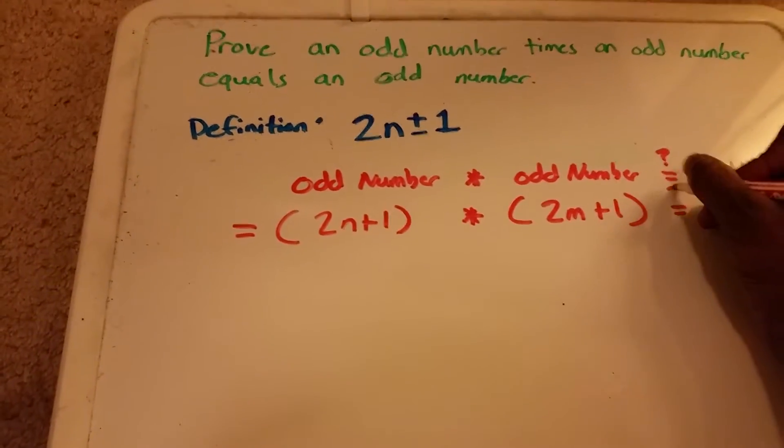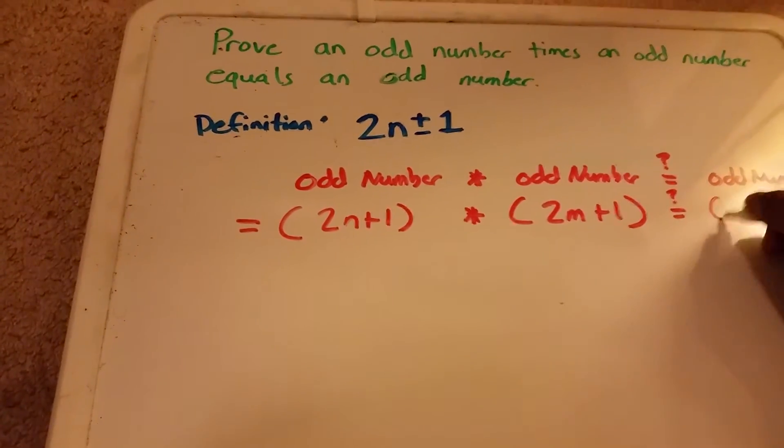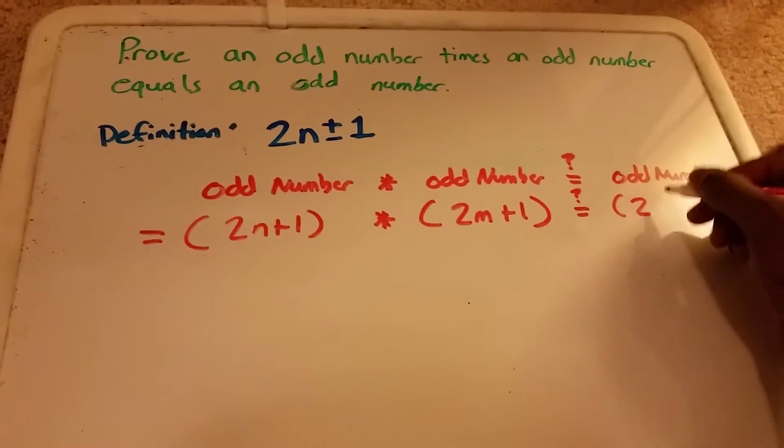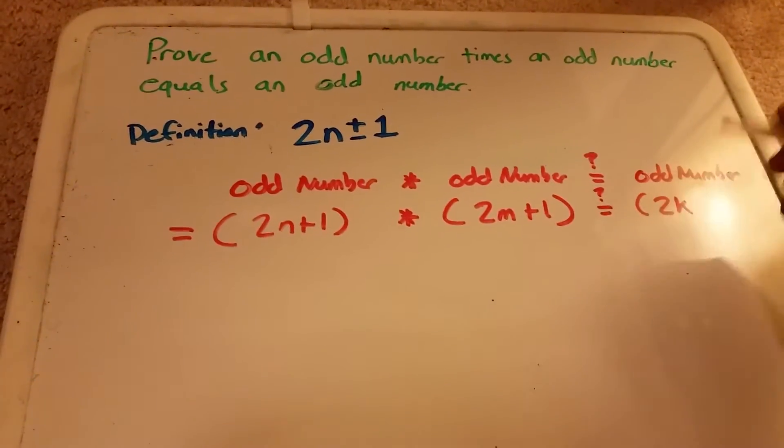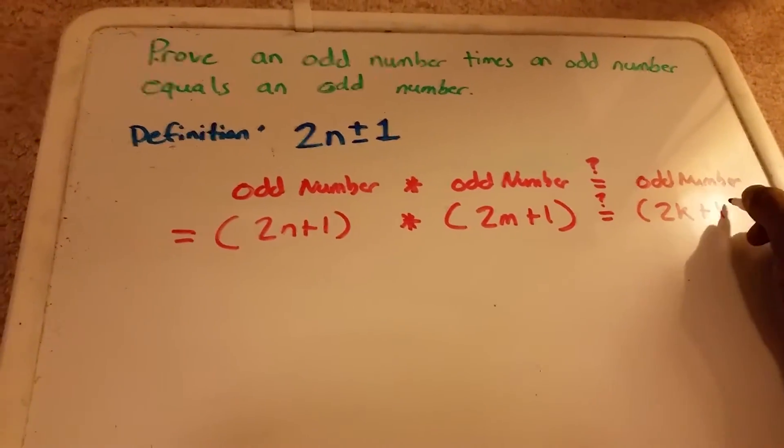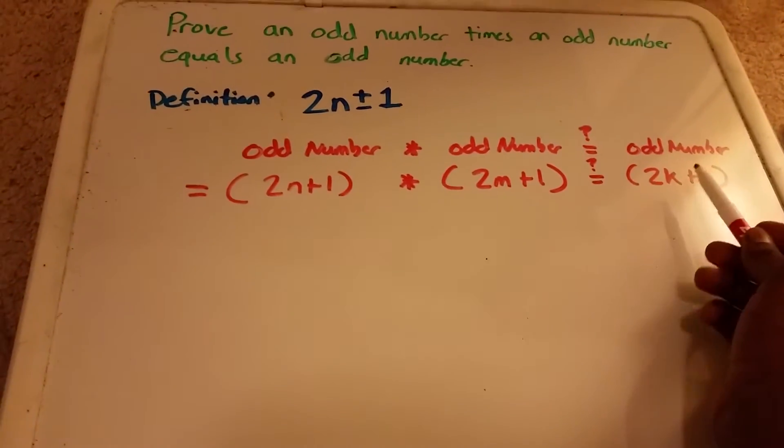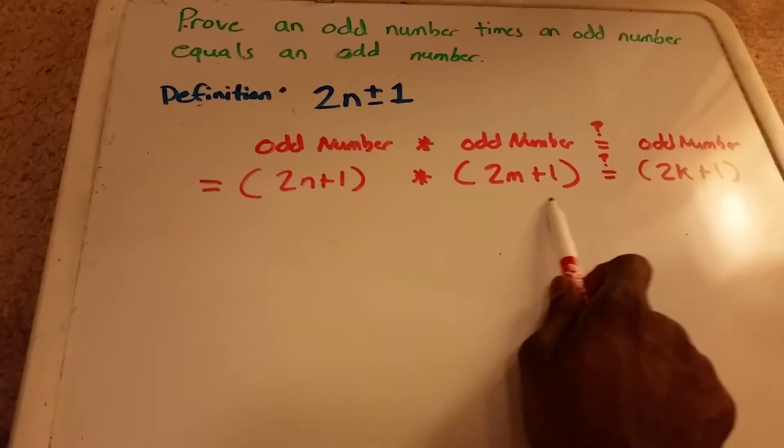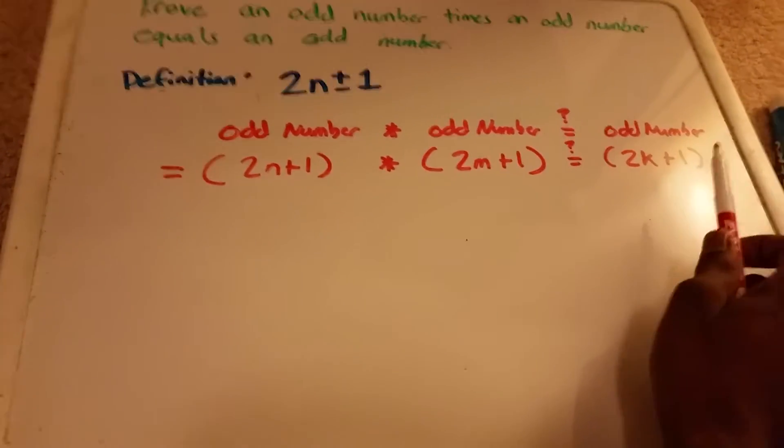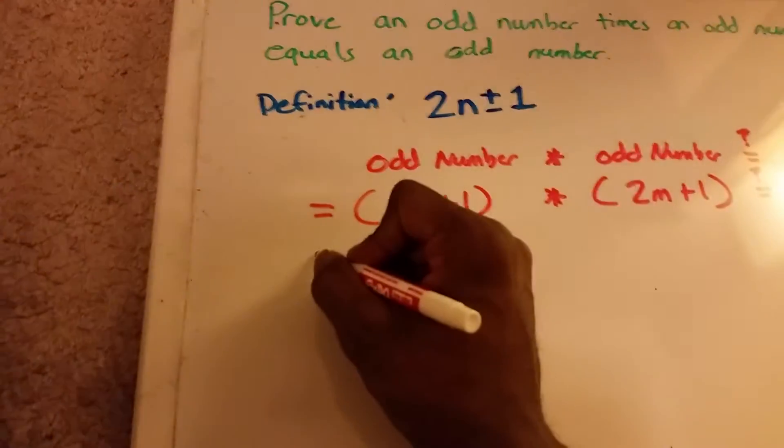And then we want to see, does it equal some other odd number? We'll call this variable here k, so 2 times k plus 1. And this is what we want to prove. And this is what we want to find out, if we can get this here in this form here. So let's start off.